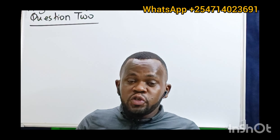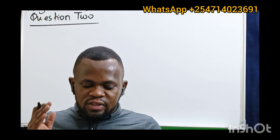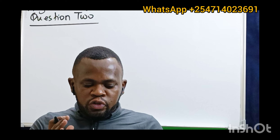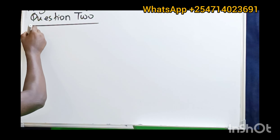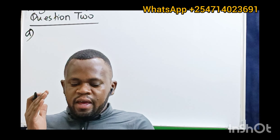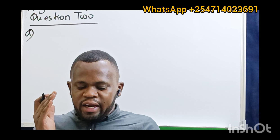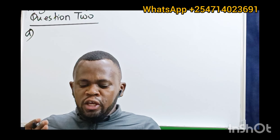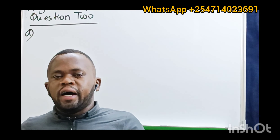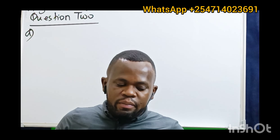So the question reads: describe four strategies that an auditor may deploy to reduce exposure to professional liabilities. That is question 2A.